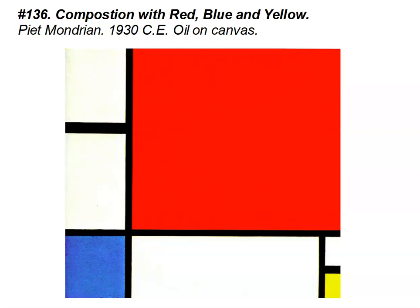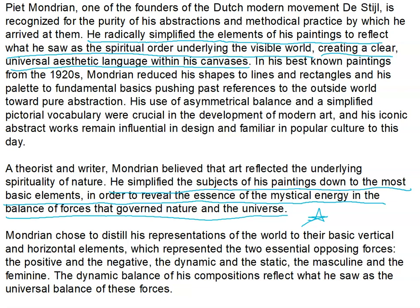The first piece we're going to look at is number 136, Composition with Red, Blue, and Yellow by Piet Mondrian, 1930, oil on canvas. Mondrian was an interesting soul — he is one of the founders of the Dutch modern movement called De Stijl. He is recognized for the purity of his abstractions and the methodical practice by which he arrived at them.